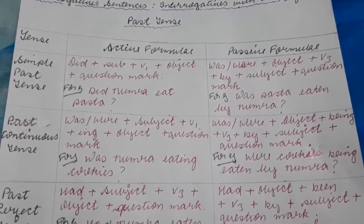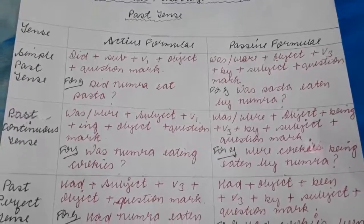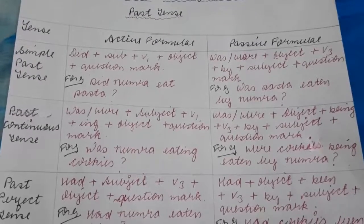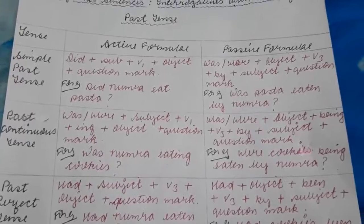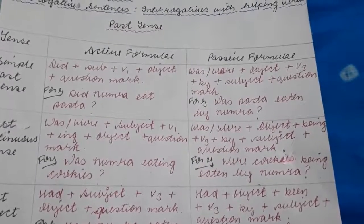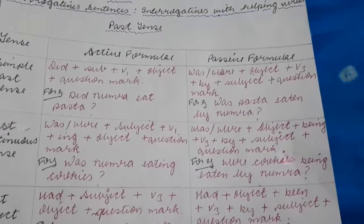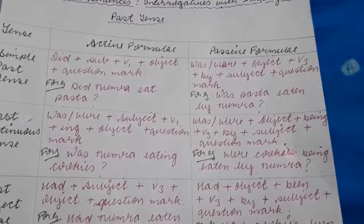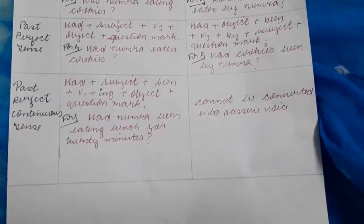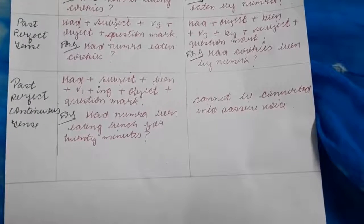Here we will also use verb 3rd form. Then, what was verb means? We will use the full tense and help verb too. It says being. So, was verb plus object plus being plus verb 3rd plus subject plus question mark. So, being plus verb 3rd comes. Was cookies being eaten by Numera?